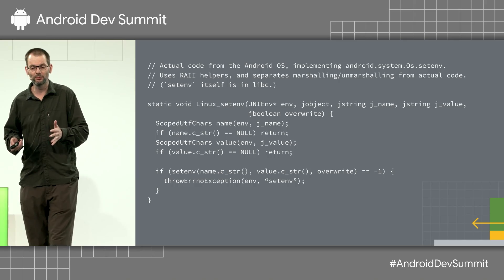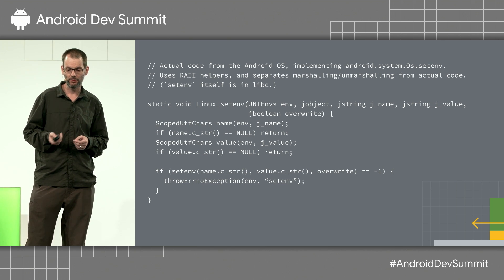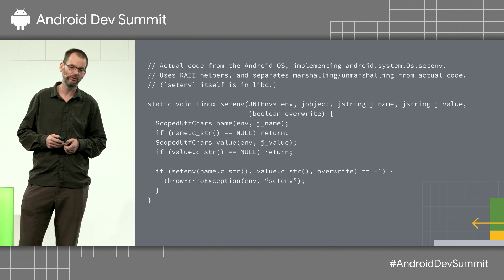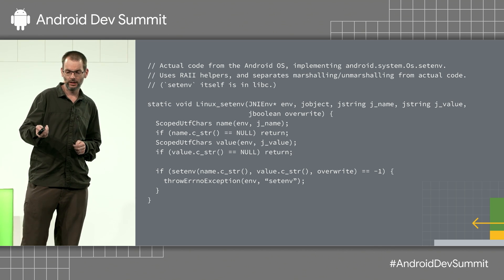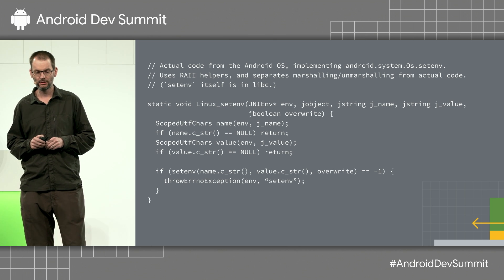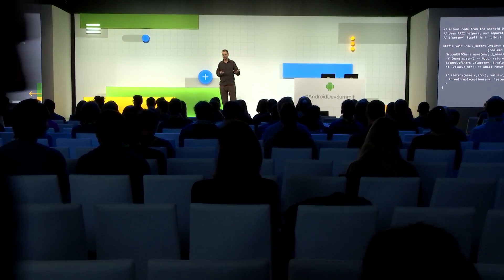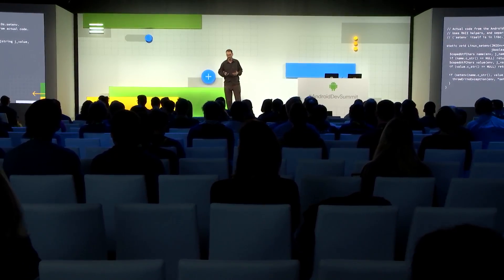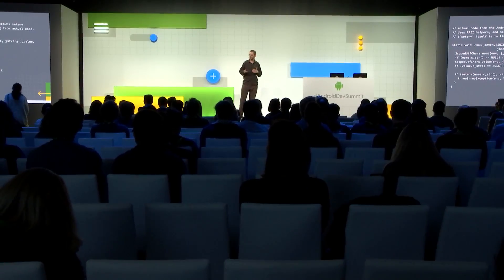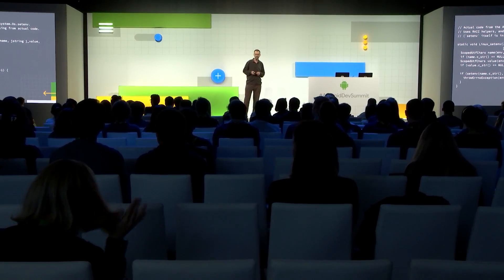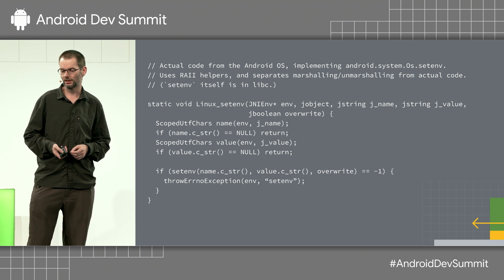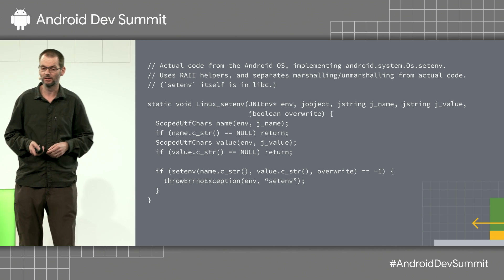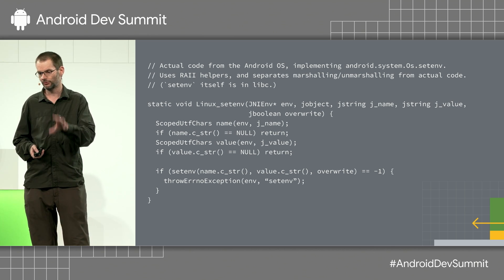So what does it look like if you actually switch to using something like this? This is the same code — the same two slides we had before, now condensed to one. I think five seconds is plenty of time for you to see which line actually does the work. You can make this shorter if you're prepared to use C++ exceptions and do some kind of transformation, but that's a more advanced topic. This gets you 90% of the benefit for 20% of the effort. This is actually what the code looks like in Android for that call.